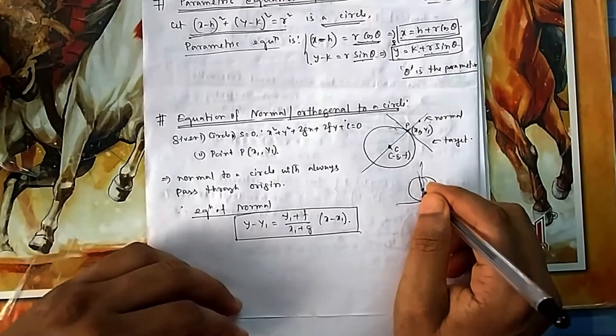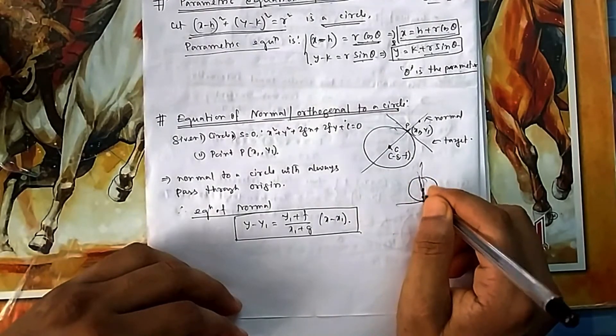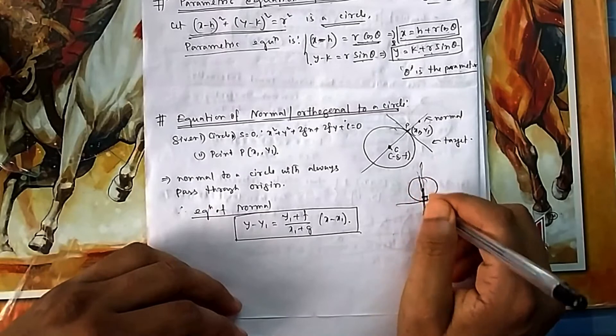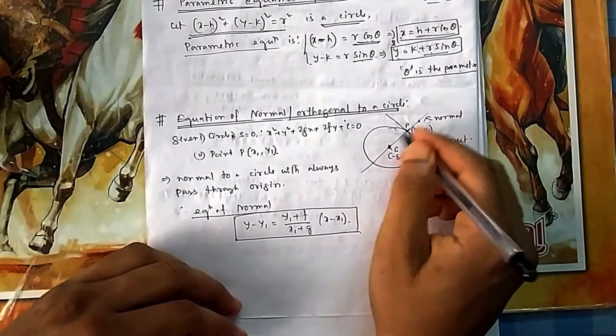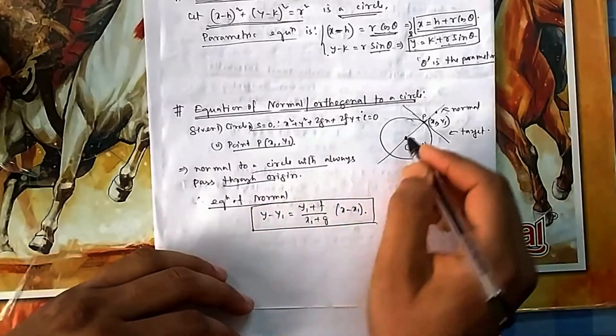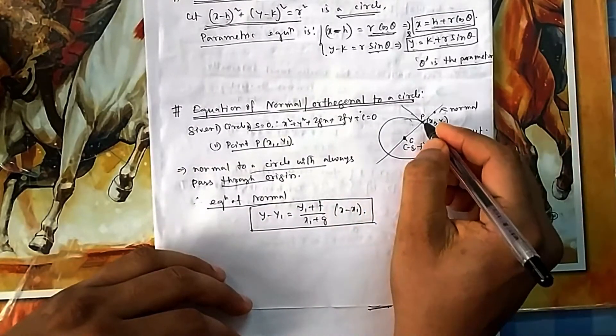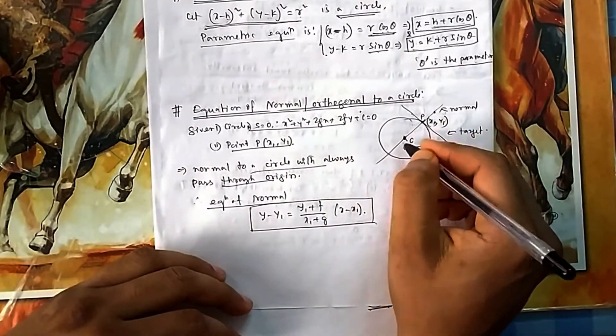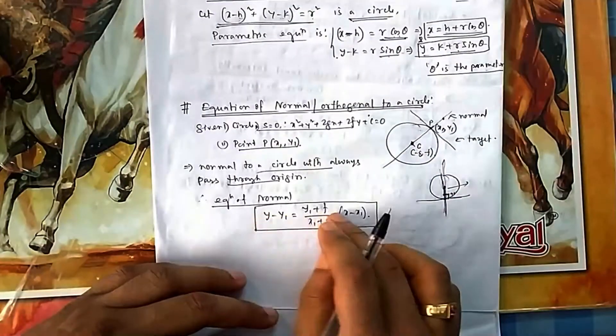If you draw a 90-degree line, it should pass through center because that is the theorem. If you draw a line from this one, then only it will be 90 degrees. So this line is the normal line. The normal line is: this point is given, this center is given, so the normal of a circle will always pass through center.